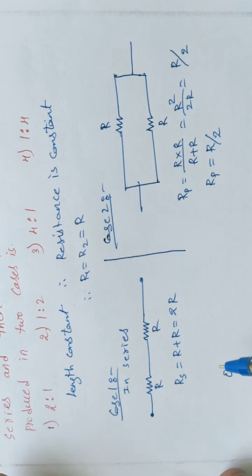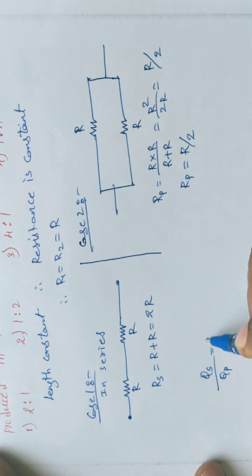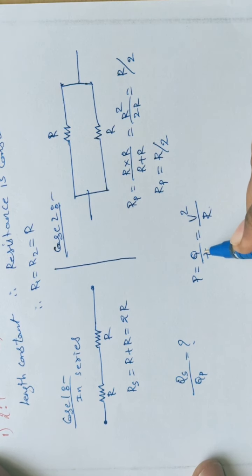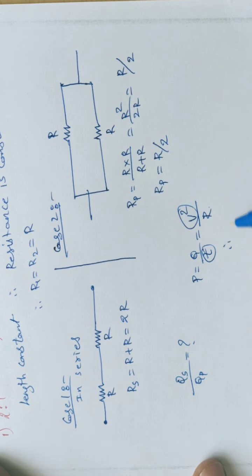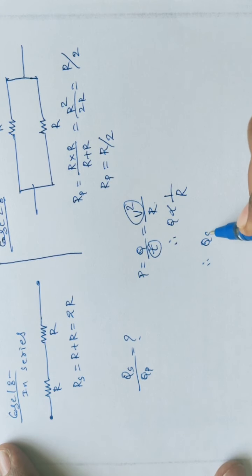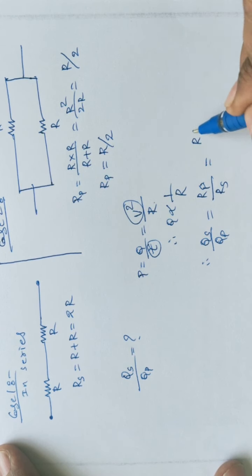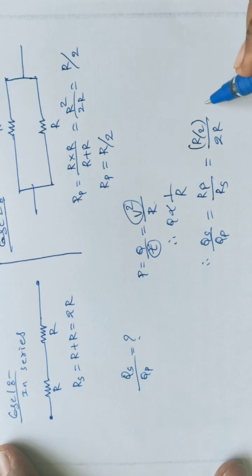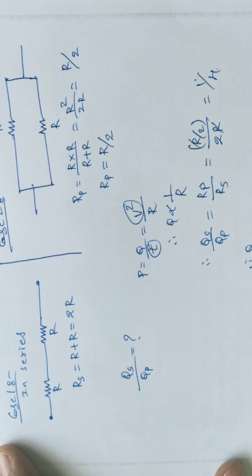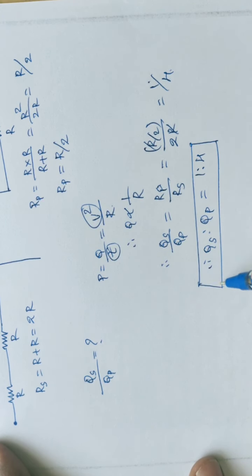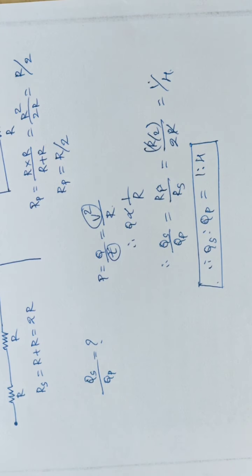We want to find the ratio of heat produced in the two cases: Qs divided by Qp. Since P equals Q by t equals V squared by R, with t and V squared constant, Q is inversely proportional to R. So Qs divided by Qp equals Rp divided by Rs, which is (R/2) divided by 2R. After cancellation, Qs to Qp equals 1 to 4.